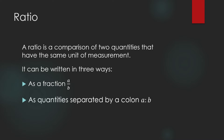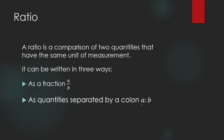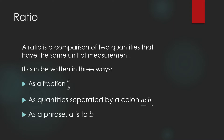You can also write the two quantities separated by a colon, and you read it as: the ratio is A is to B. Or you can write it as a phrase in a sentence: the ratio is A is to B.